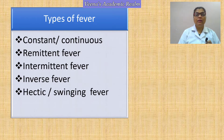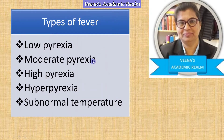Let us start with the definitions. First is low pyrexia. Low pyrexia is when the body temperature is between 99 to 100 degrees Fahrenheit, or between 37.2 to 37.8 degrees Celsius. When the body temperature falls in this range, we call it low pyrexia.